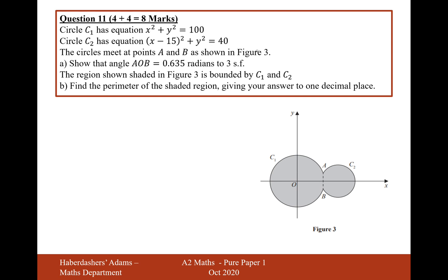The circles meet at points A and B. The length from the center of C1 to the circumference is 10. The length from the center of C2 to the circumference is root 40. And then the distance between the two centers — C1 is at the origin and C2 is at 15 — so that length is 15.